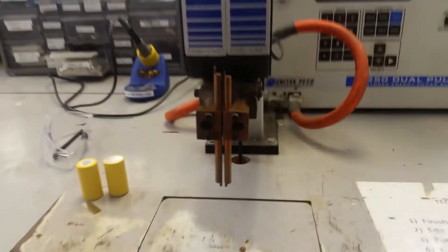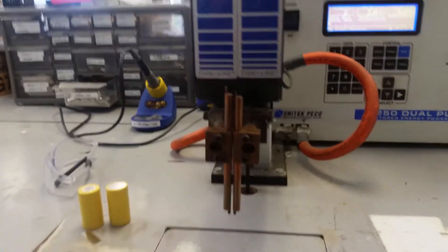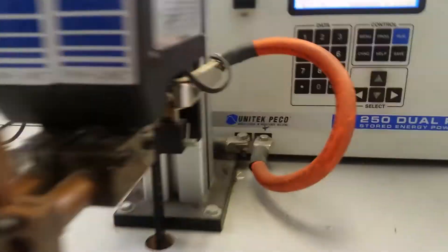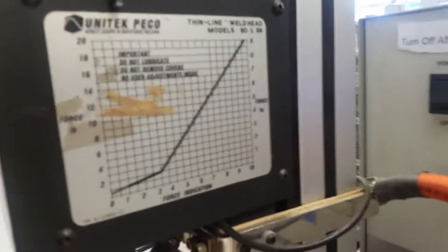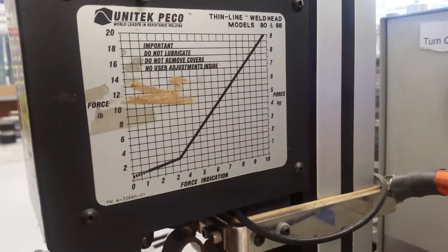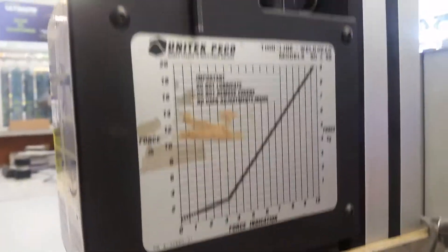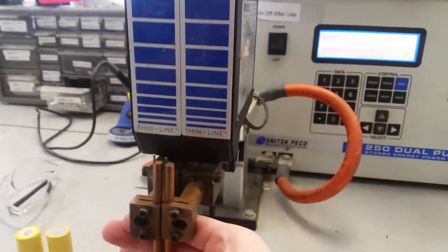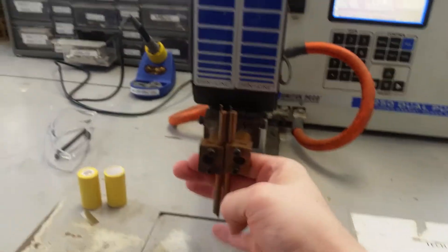Now this is the actual welder itself, the welding head I guess you would call it. Little chart here on the side, no idea what the hell it means, but there you go. I guess it's about the force it requires to push those up. I believe that's what these dials do up here.